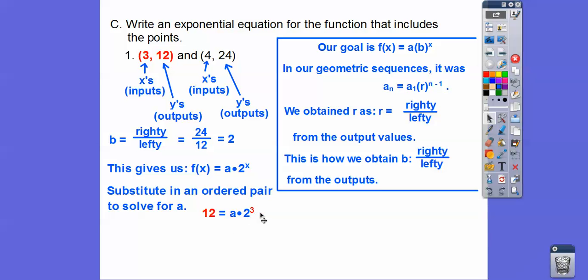So if we substitute 3 in for x and 12 in for y, remember f of x equals y, so that's our 12 right there. So 12, so 2 to the third is 8, so 12 equals a times 8. And then we divide both sides by 8, and then 4 goes into both of those, 3 and 2 times, so a equals 3 halves. So then our equation is f of x equals 3 halves times 2 to the x.